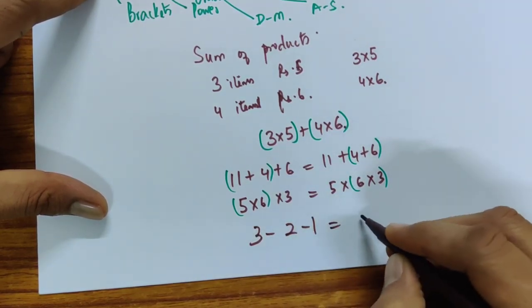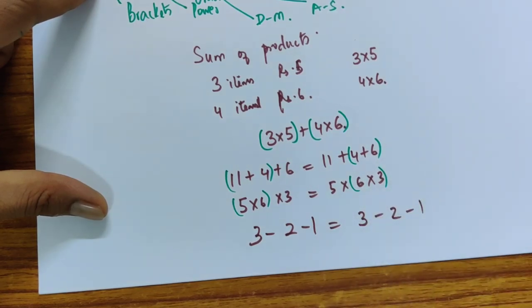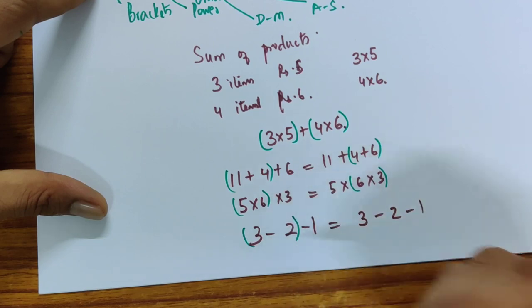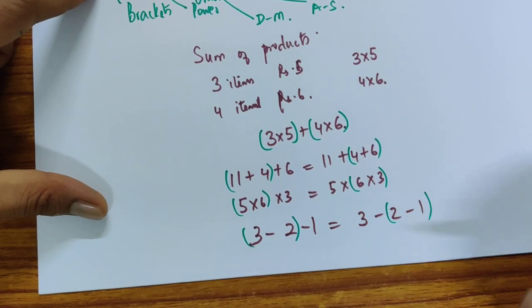But if you had something like this one, depending on what you did if you did this you would get 1 minus 1 which is 0, but if you did this you get 3 minus 1 which is 2.